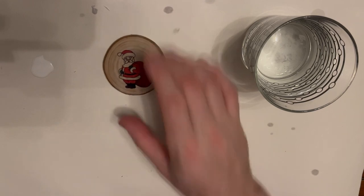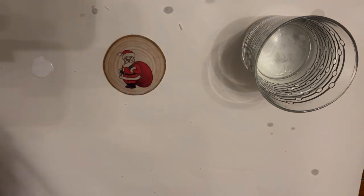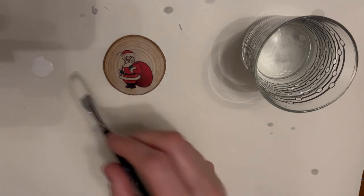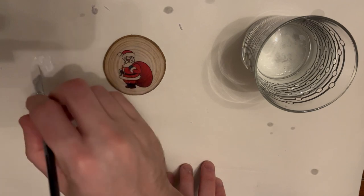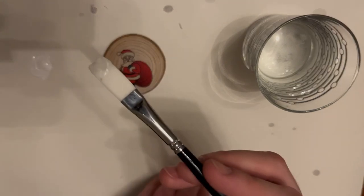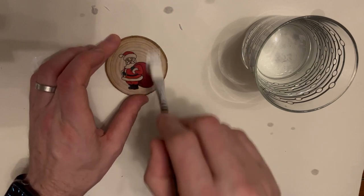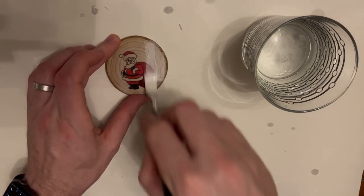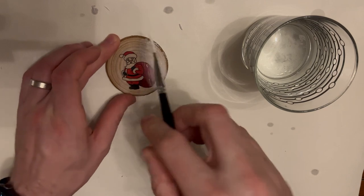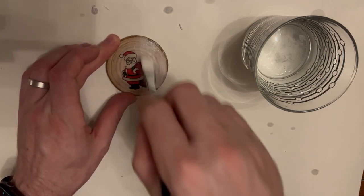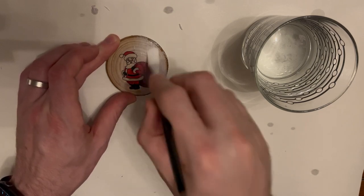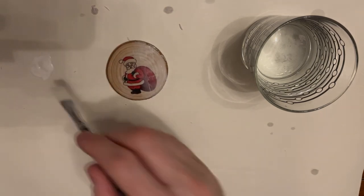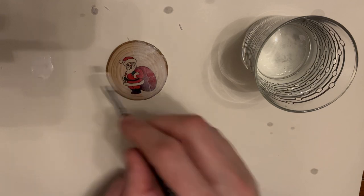Once we're happy with our image, and I would recommend leaving this another time, but I'm happy enough with the way that's turned out. I'm going to take my wood glue here, and I'm going to apply a coat across the surface of it. This is going to seal my image so that it'll be scratch resistant or as close to scratch resistant as we can get it.